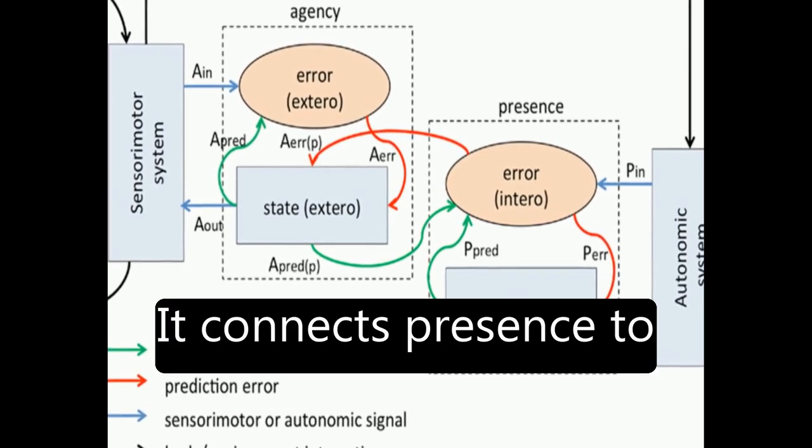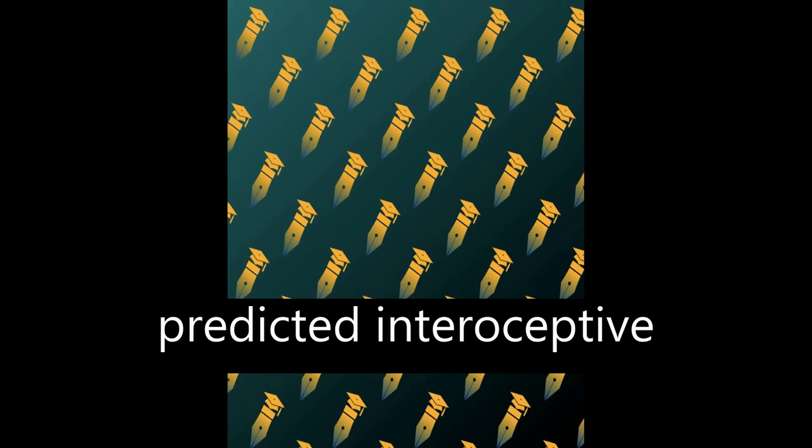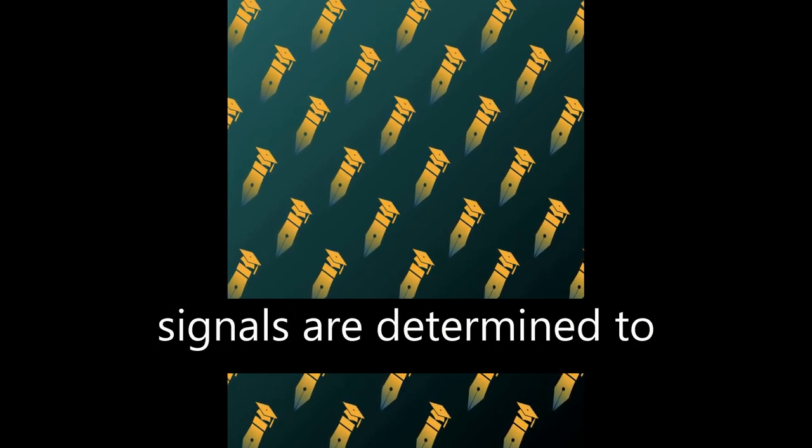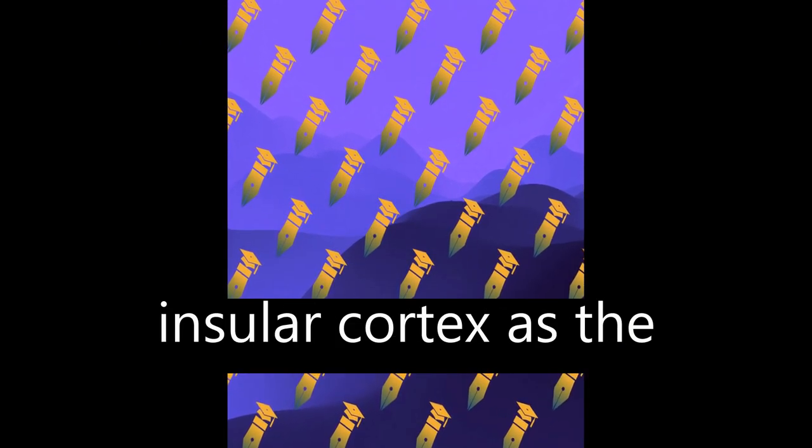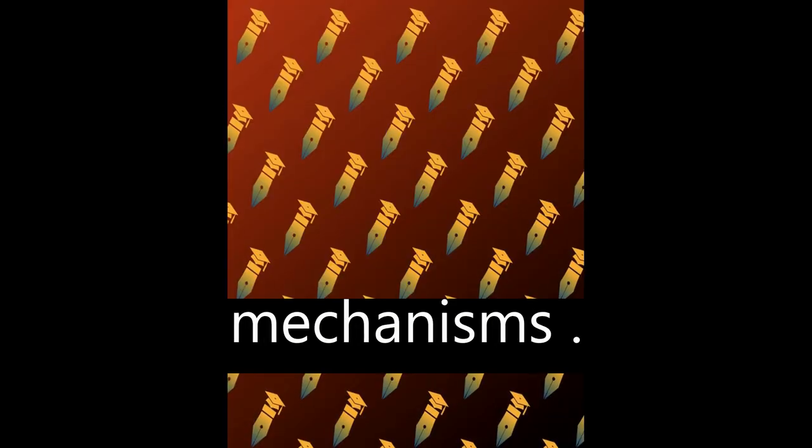It connects presence to agency by allowing that predicted interoceptive signals will depend on whether afferent sensory signals are determined to be self-generated or externally caused, and identifies the anterior insular cortex as the likely locus of key neural comparator mechanisms.